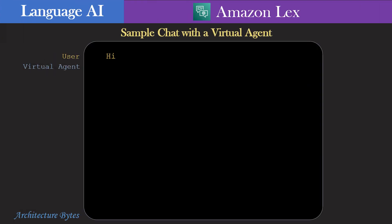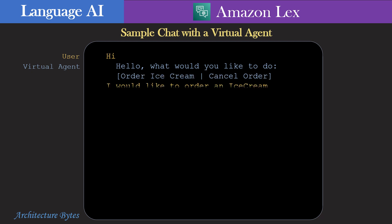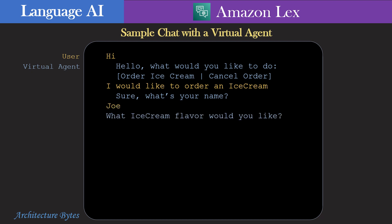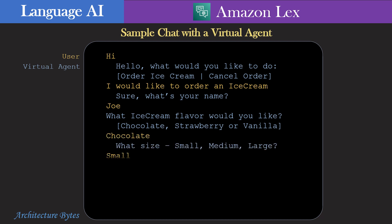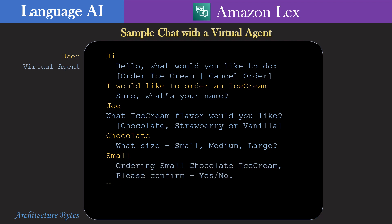Here's a sample chat with a virtual agent. The user Joe is trying to order an ice cream by talking to a virtual agent. After providing his name, he specifies the flavor as chocolate and size as small for his ice cream. The virtual agent takes all these inputs and creates an order.